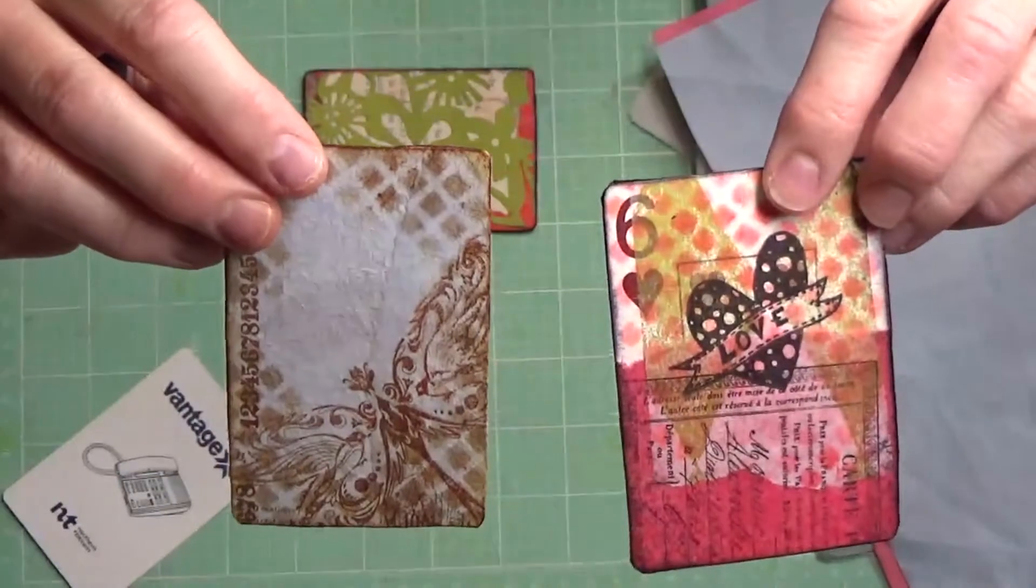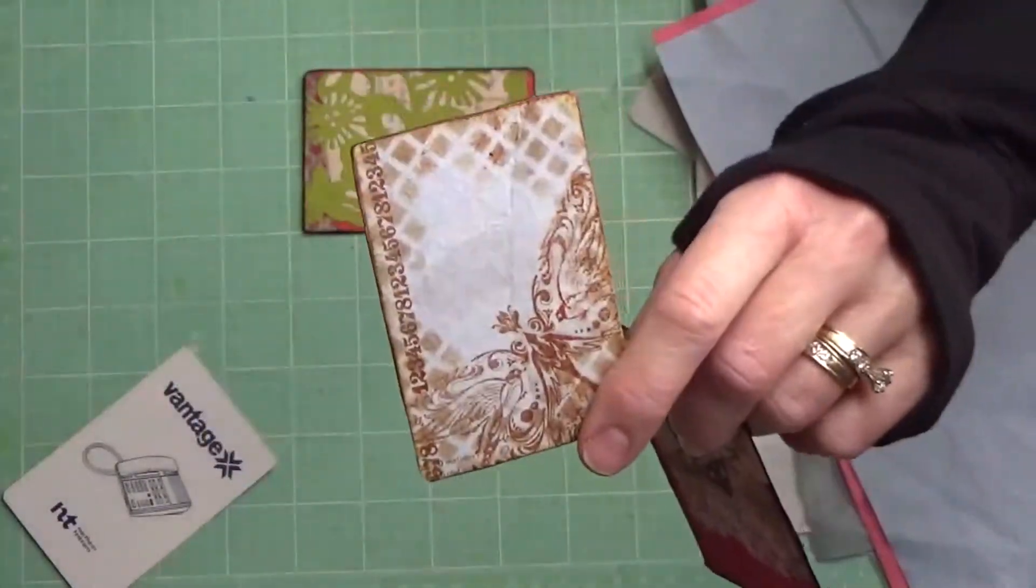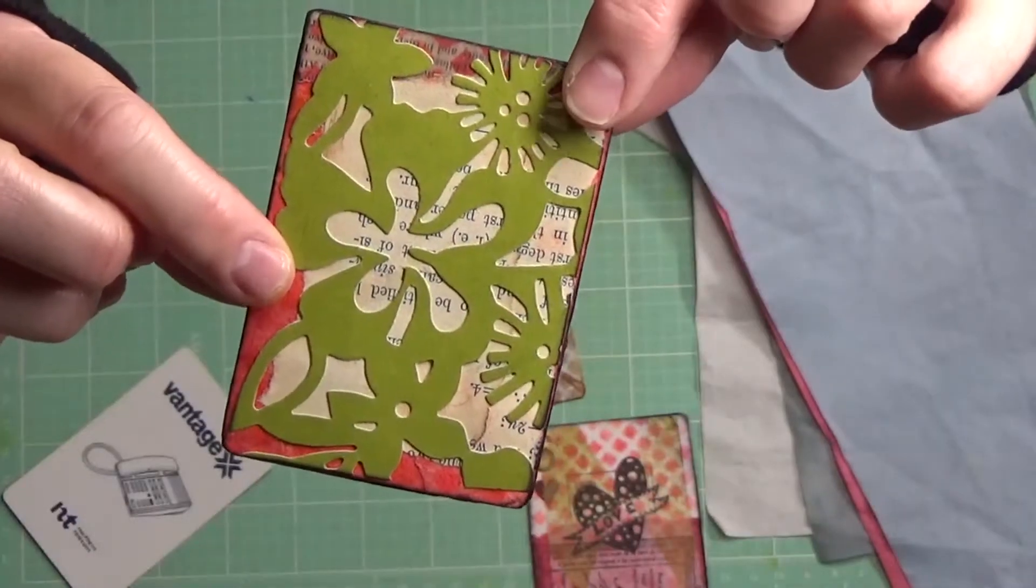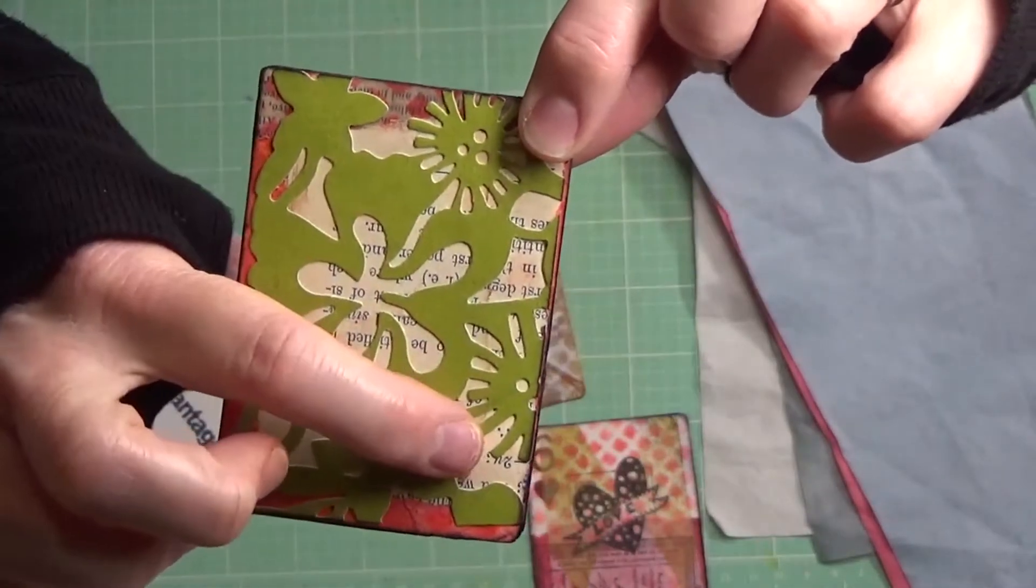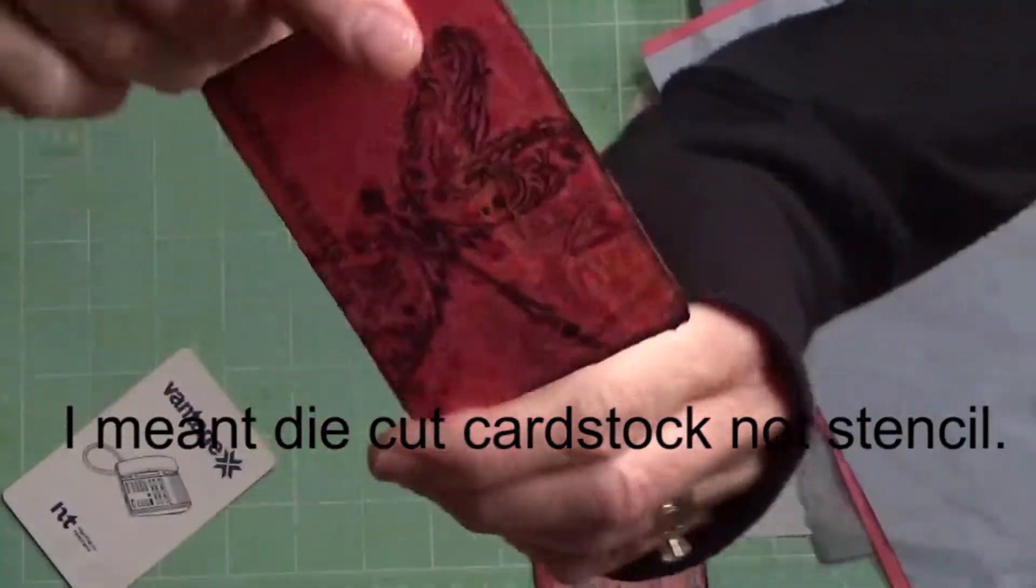I'm using these as ATCs, but you could do anything with these. You could turn them into a postcard. You could mail them. Lots of fun stuff. Here's one that I did first with a layer of the color catcher. Then I added on some paper and also another stencil that I had.